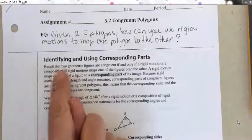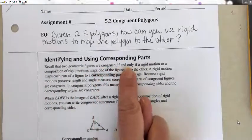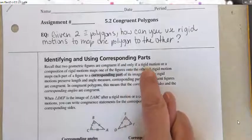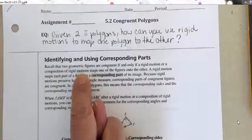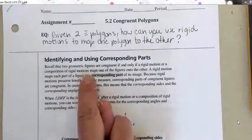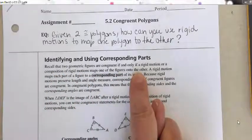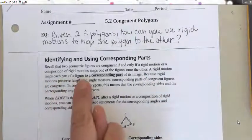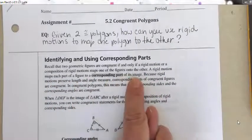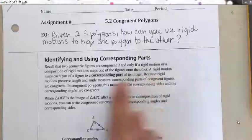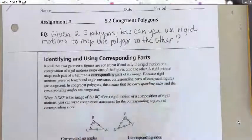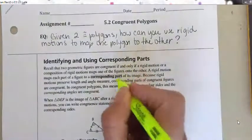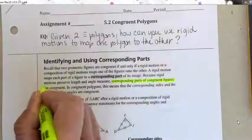Recall that two geometric figures are congruent if and only if a rigid motion — a transformation like a translation, reflection, or rotation — or a composition of rigid motions (all of them together) maps one of the figures onto the other. A rigid motion maps each part of a figure to a corresponding part of its image. Because rigid motions preserve length and angle measure, corresponding parts of congruent figures are congruent.